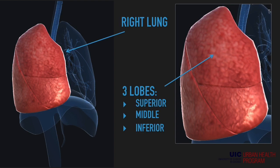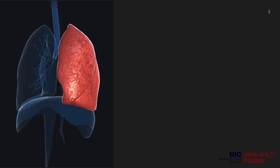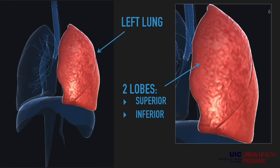As we move to the left lung, you will see the difference. The left lung only has two lobes, and from top to bottom these lobes are called superior and inferior.